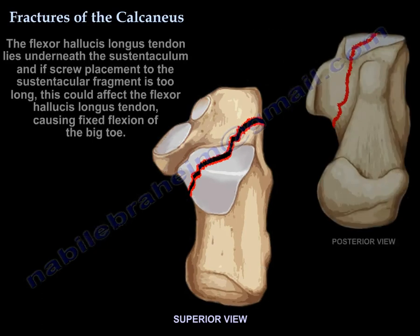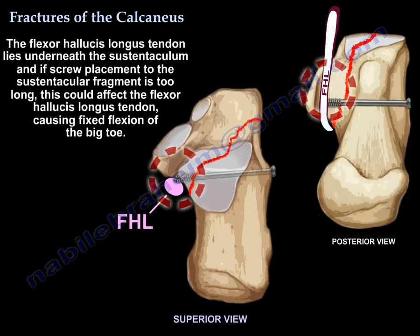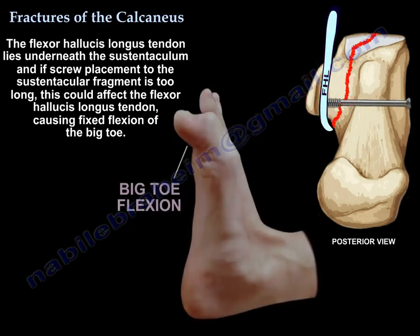The flexor hallucis longus tendon lies underneath the sustentaculum. If a screw placed into the sustentacular fragment is too long, this could affect the flexor hallucis longus tendon, causing fixed flexion of the big toe.